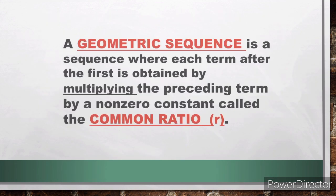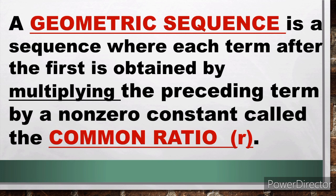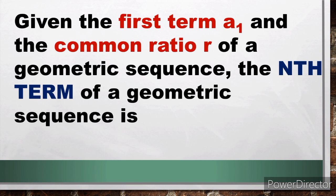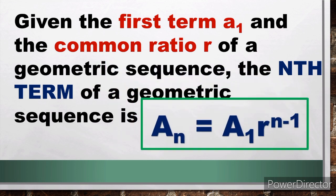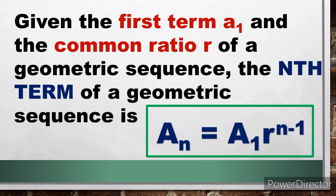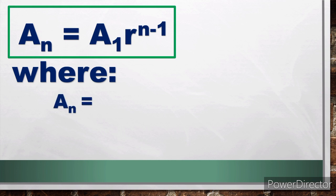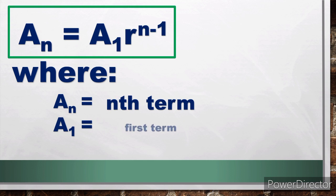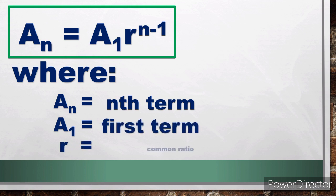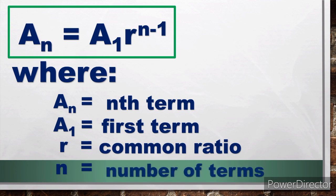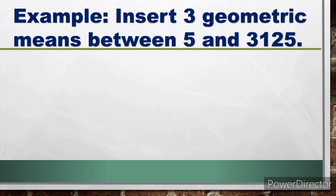What is a geometric sequence? A geometric sequence is a sequence where each term after the first is obtained by multiplying the preceding term by a non-zero constant called the common ratio, or r. Given the first term a₁ and the common ratio r, the nth term of a geometric sequence is: a_n = a₁ × r^(n−1). Here, a_n is the nth term, a₁ is the first term, r is the common ratio, and n is the number of terms.